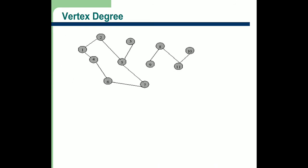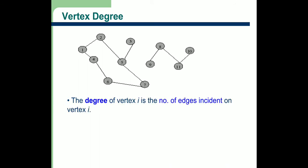Next thing is vertex degree. What is vertex degree? The degree of a vertex is the number of edges incident on a particular vertex i. That means, for any particular vertex, how many edges it has — that is known as degree.